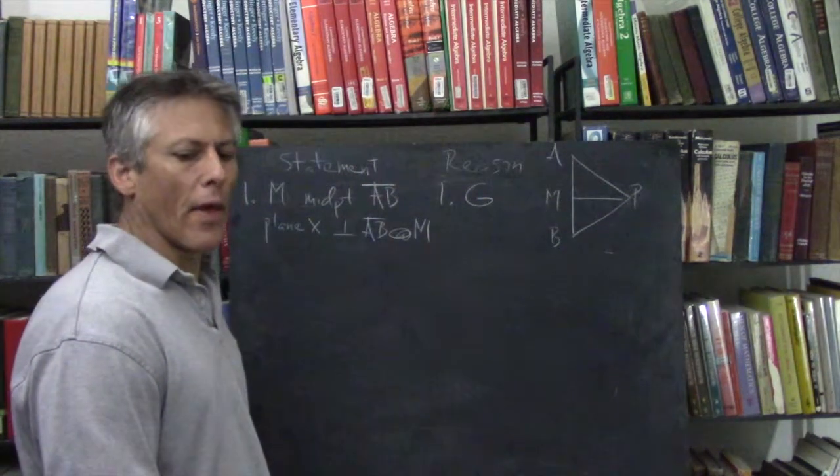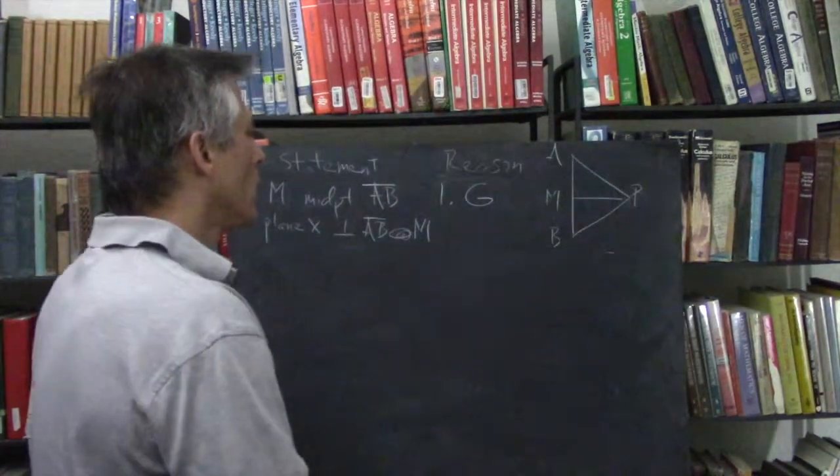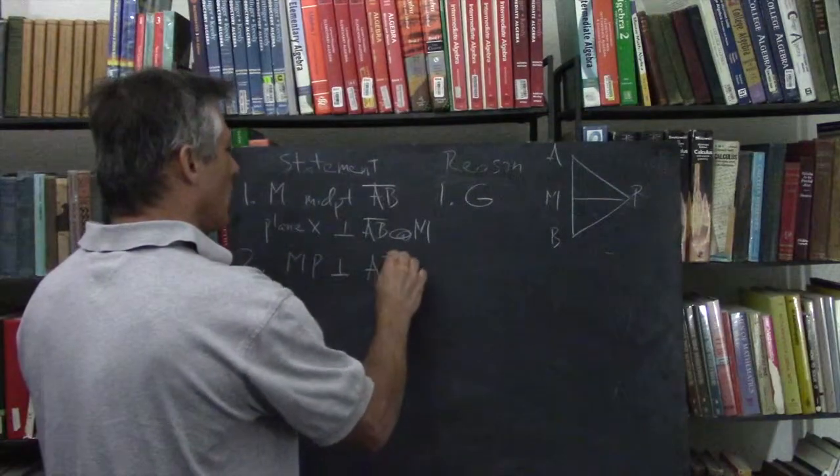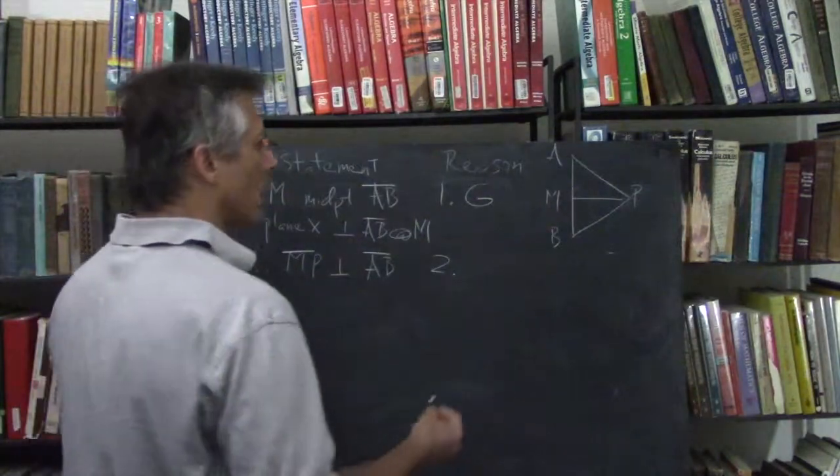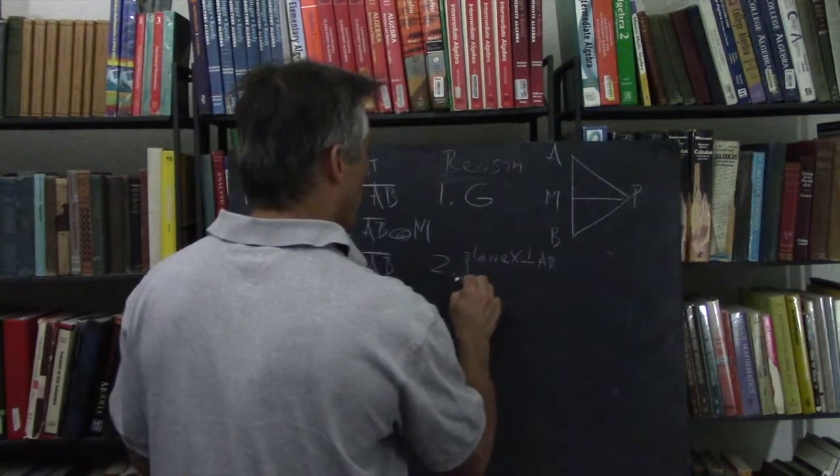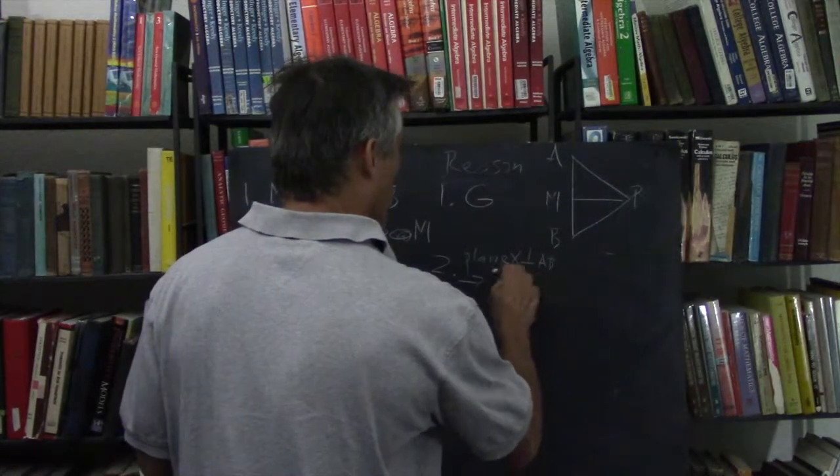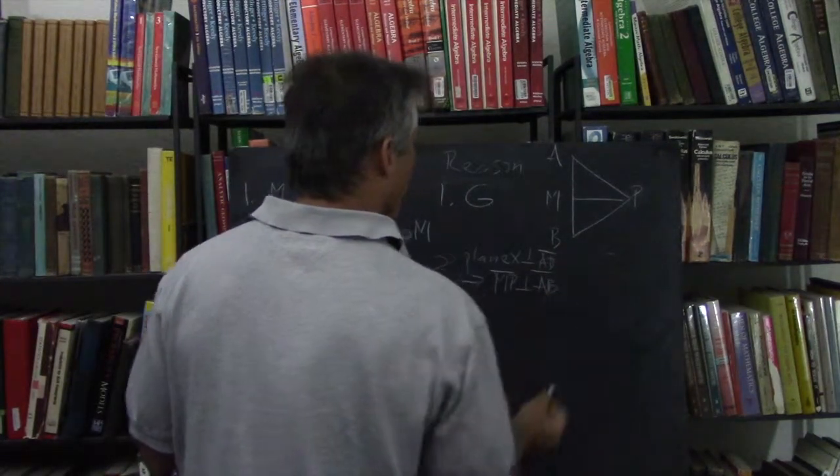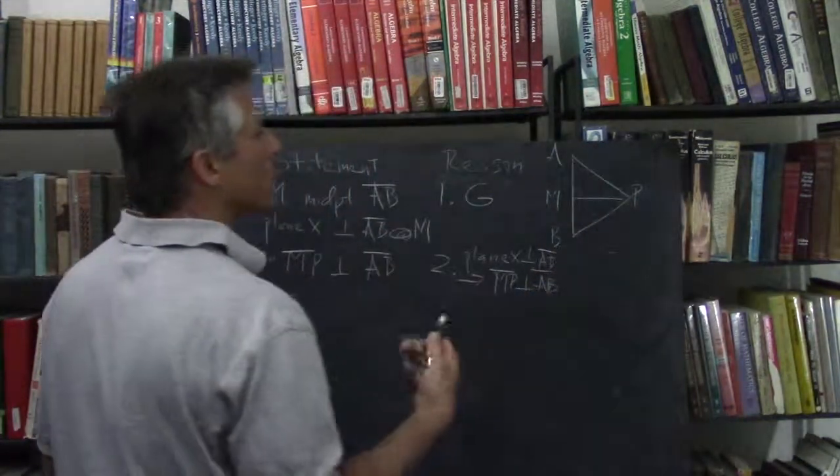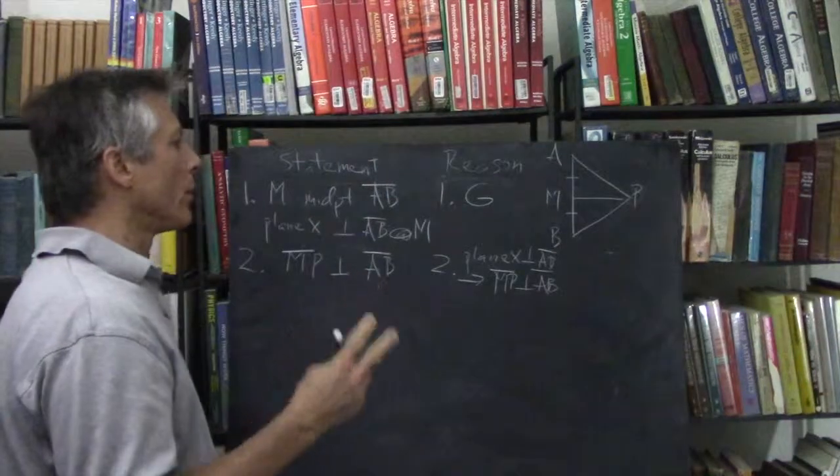If the plane is perpendicular then a line in it is perpendicular to AB so MP is perpendicular to AB. So we can conclude MP perpendicular to AB because plane X perpendicular to AB means a line means MP would be perpendicular to AB. OK so now let's mark down that information in the diagram to help us think about what's going on.